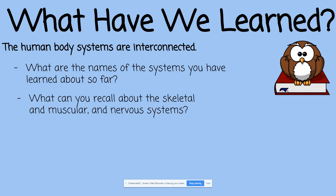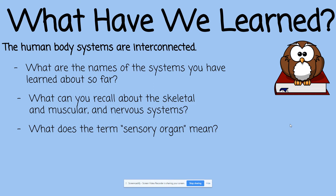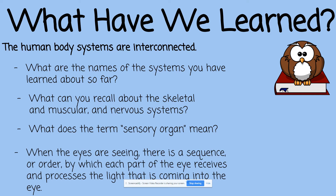So our skeletal, muscular, and nervous systems are all interconnected to each other. Then we mentioned the term sensory organ. The word sensory organ means that it's an organ that allows us to use one of our five senses. We have our ears that hear, our nose for smelling, our eyes which see, and our fingers and skin for touch. The organs are those parts of your body that allow your senses to receive information about the environment.